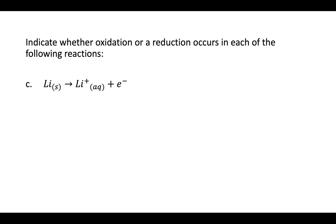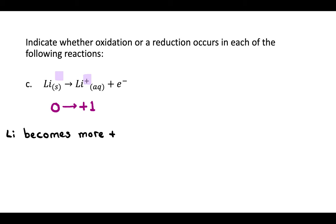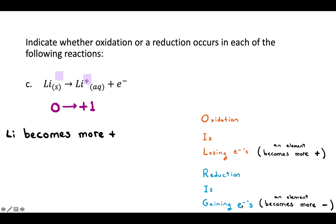Indicate whether oxidation or reduction occurs in the following reaction. Our element is lithium. To the left of the arrow, nothing is written in the top right of lithium, meaning it has a zero charge. When you go across the arrow, at the top right of lithium is a plus one charge — when no number is written, it's an implied one. So lithium is going from zero to positive one, meaning it's becoming more positive. If you become more positive, that means oxidation is happening — lithium must have lost electrons.